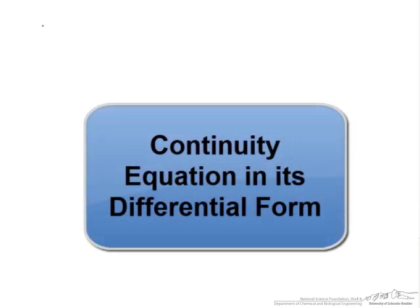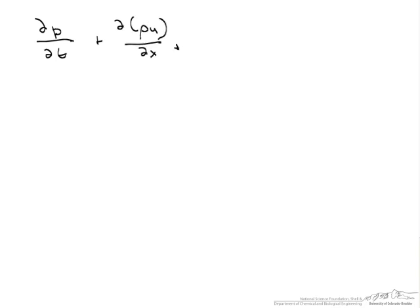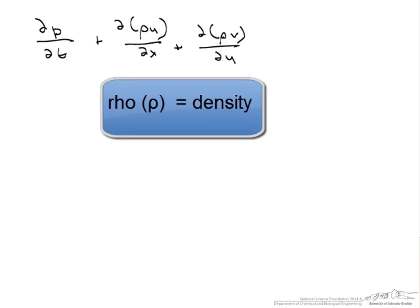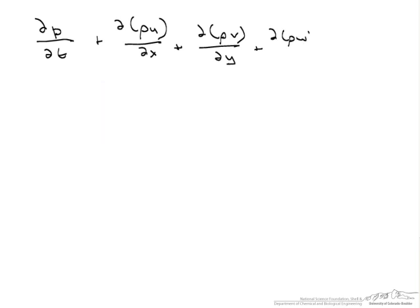One of the most important equations in fluids is the continuity equation, or conservation of mass, and here we're going to look at it in its differential form. So this is d(rho)/dt + d(rho*u)/dx + d(rho*v)/dy + d(rho*w)/dz, and in order for conservation of mass to be satisfied, that has to be equal to zero, where rho equals our density. We can also write it in this compact form: d(rho)/dt + del·(rho*v) = 0.